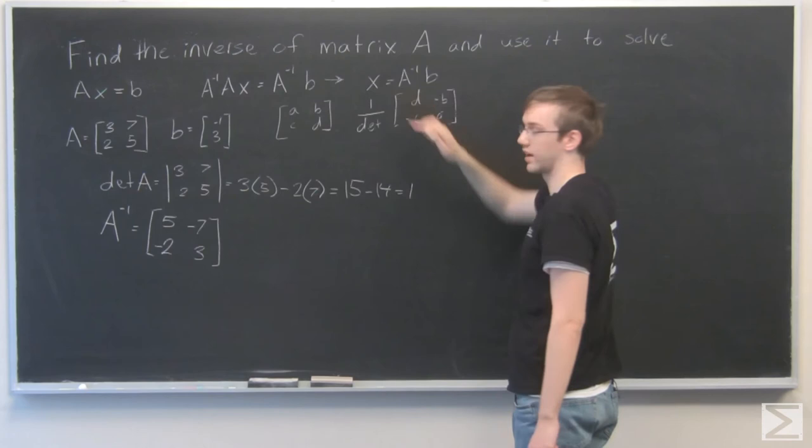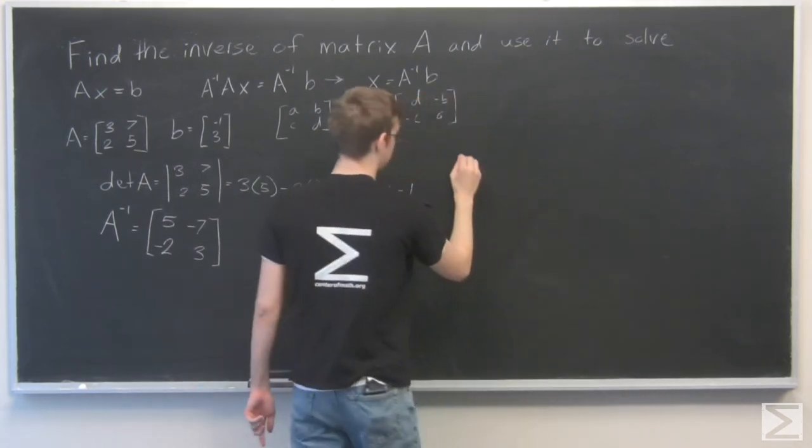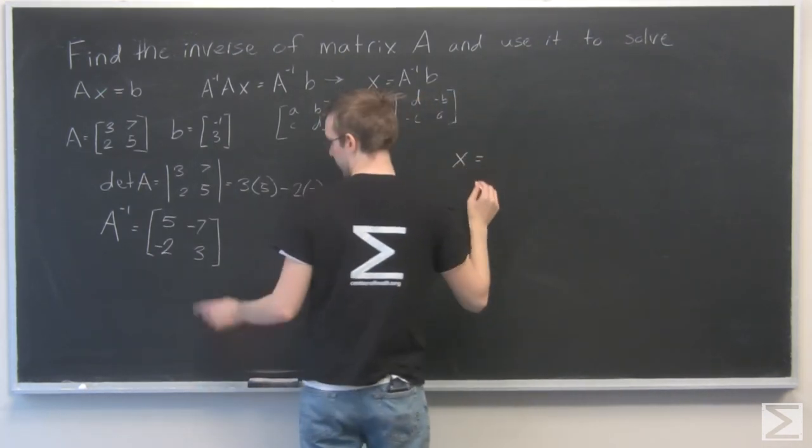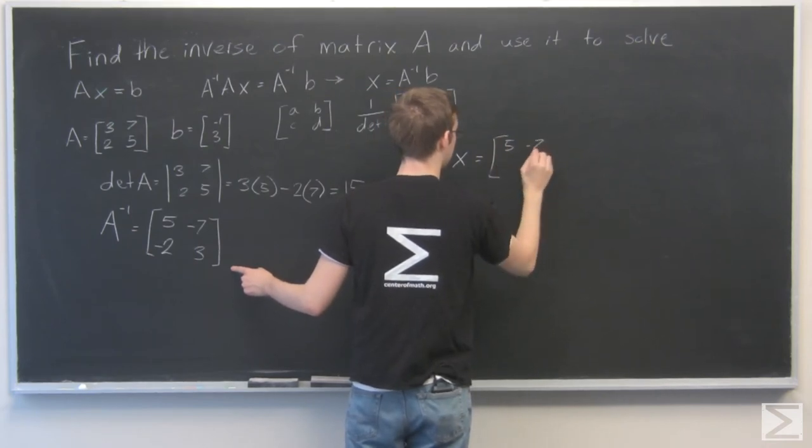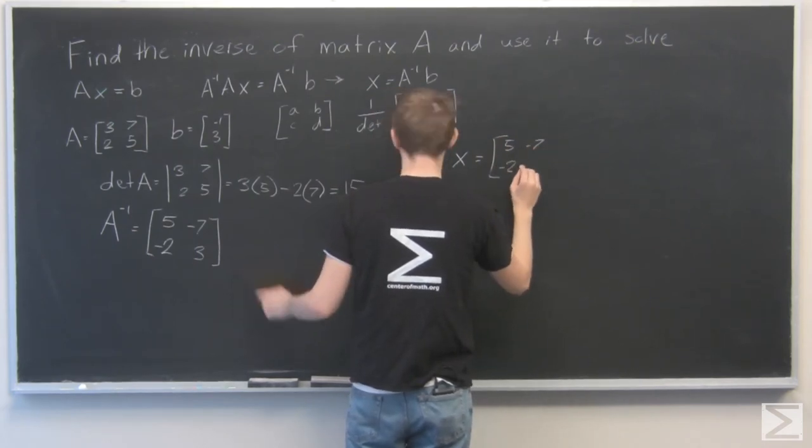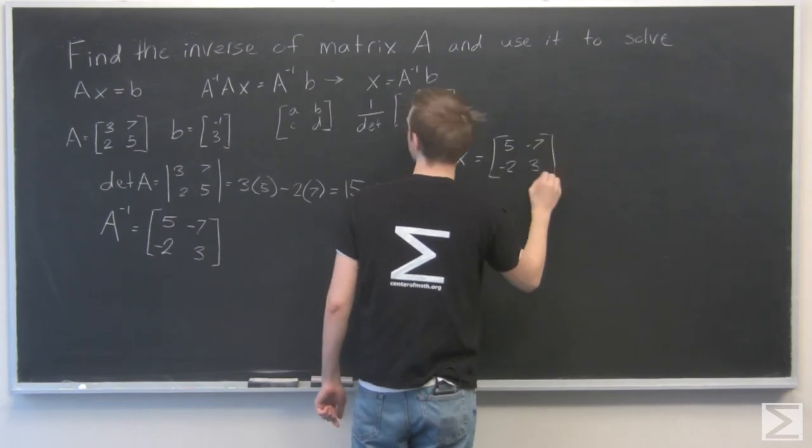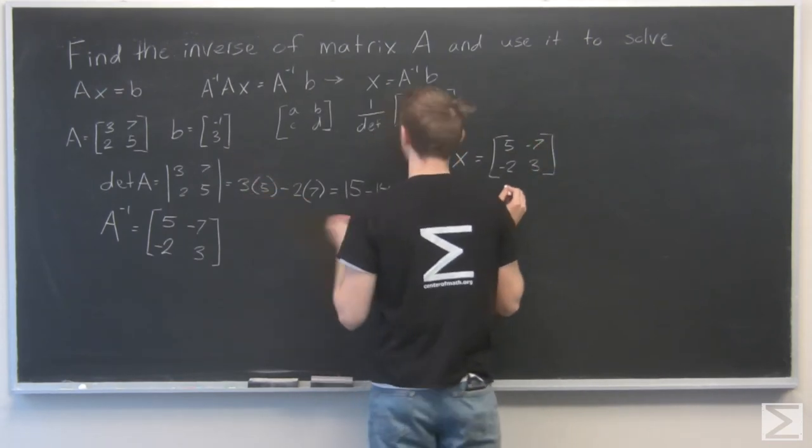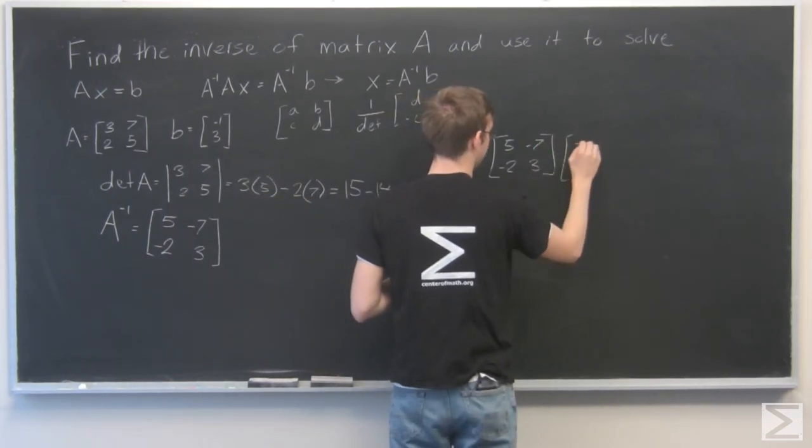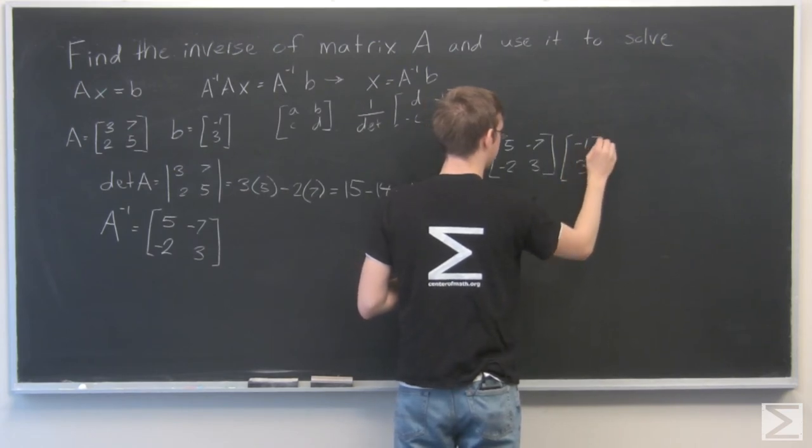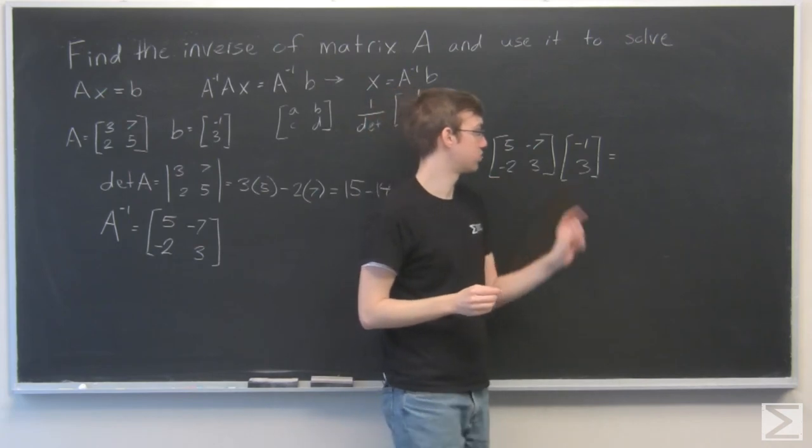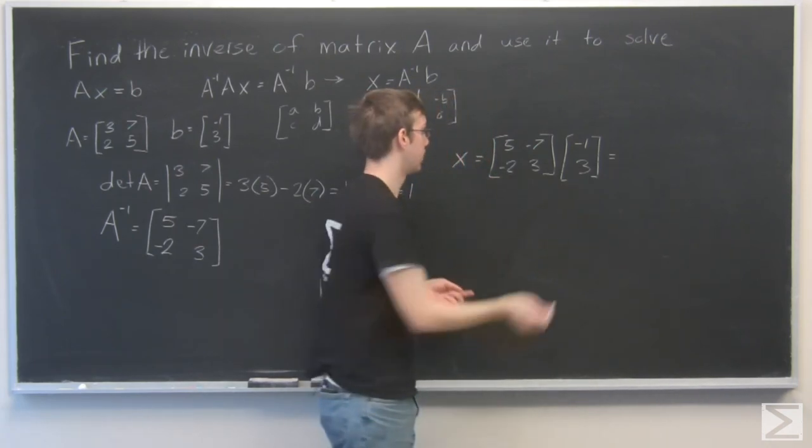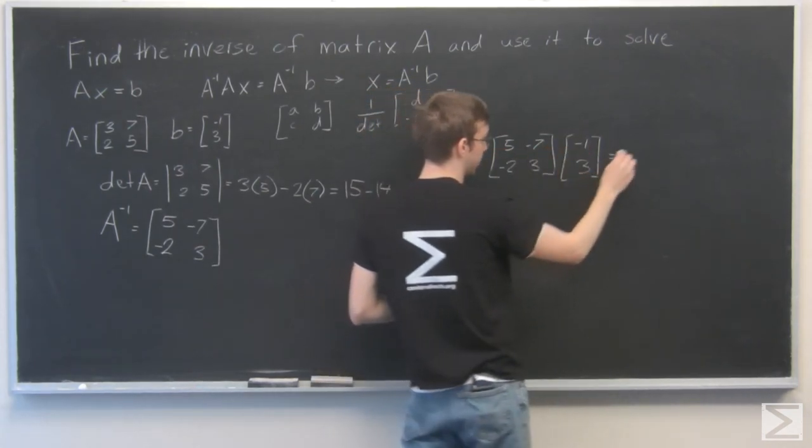We just need to multiply it by b in order to get x. So x equals A inverse times b, and b is minus 1, 3. All right, so that's 2 by 2. That's 2 by 1. The answer is going to be 2 by 1. Multiply across a row by a column.